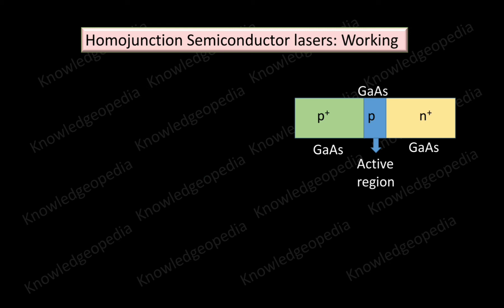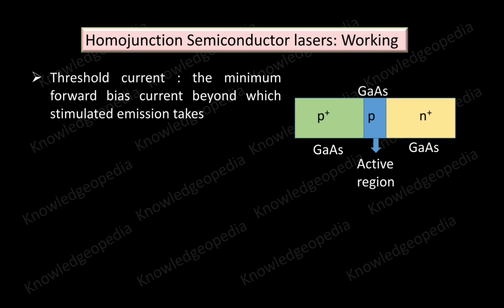At low forward current, spontaneous emission generally occurs. But as the forward current increases beyond a certain value, stimulated emission begins. That particular value of forward current is known as the threshold current — the minimum forward bias current beyond which stimulated emission takes place.